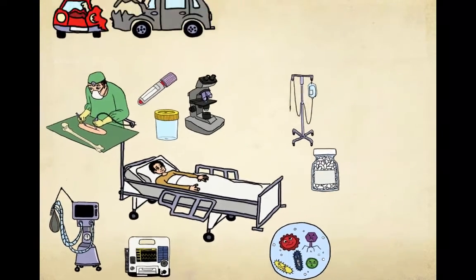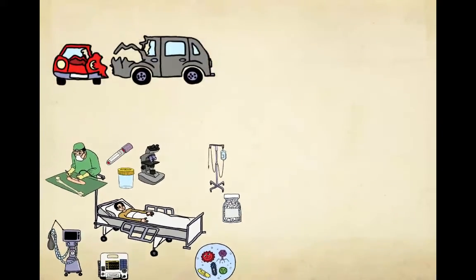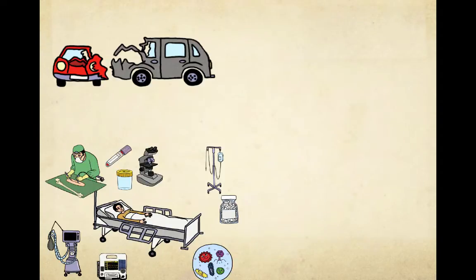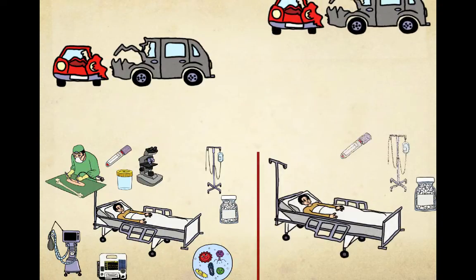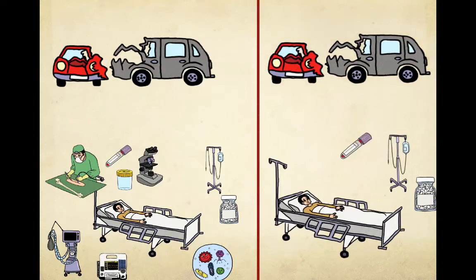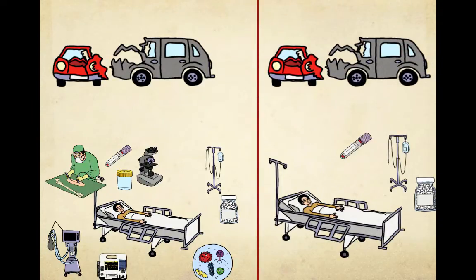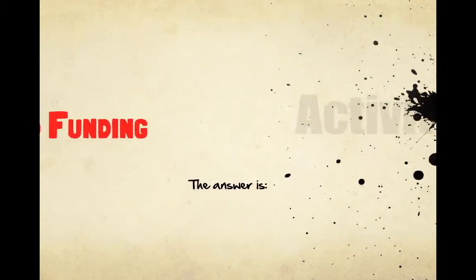But imagine somebody else came in with the same problem, but their stay was less complicated. How do we compare the two? The answer is activity-based funding.